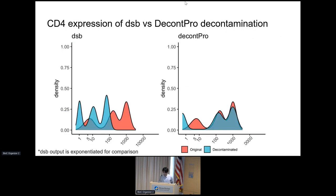Here is a side-by-side comparison of DSB versus DecontPro. Overall, DSB makes the background peaks more distinct, making thresholding easier. DecontPro, while taking longer, can parse out the background peaks from the true cells with the distribution of true cells relatively unchanged.